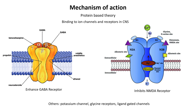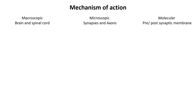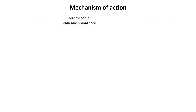Recent research has shown that the two theories are not mutually exclusive. Instead, they represent complementary mechanisms. The mechanisms of action of inhalation anesthetics can also be viewed on different levels: macroscopic, affecting the brain and spinal cord; microscopic, targeting synapses and axons; and molecular, influencing pre- and postsynaptic membranes.